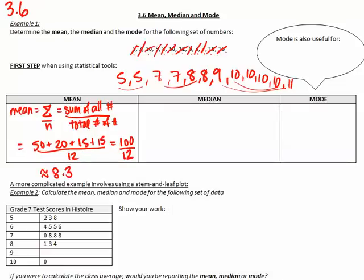Let's see if that makes sense. The mean is the average — pretty much all the numbers matter, and it's kind of in between all of them. I have numbers from 5 to 11, and it lands at 8.3. It's on the higher end because I have a lot of 10s and an 11 that boosts it up a little bit.